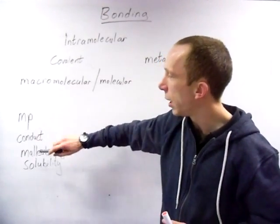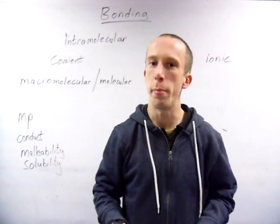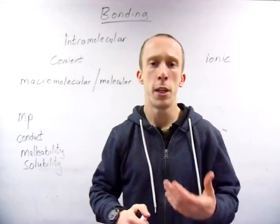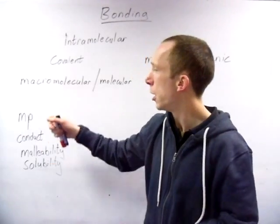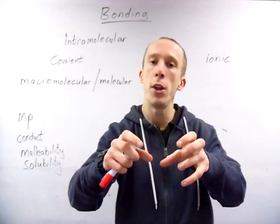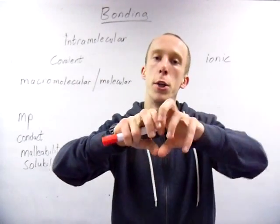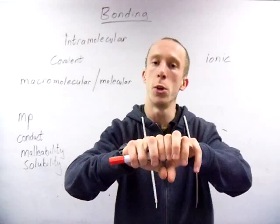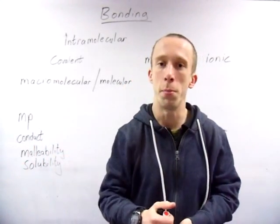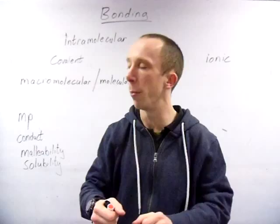Now the malleability. Well think about it - if you try and bend diamond, what happens? It's going to break if you apply enough force. It's one of the hardest substances there is. So macromoleculars are not malleable. If you try to bend them you've got to supply enough energy to break those bonds and all that happens is it breaks and shatters.